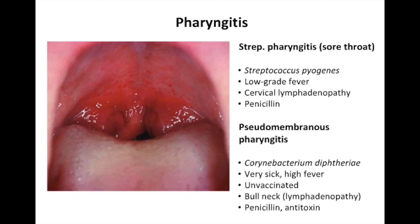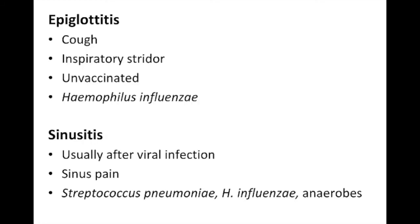Moving on, let's talk about epiglottitis — an infection of the epiglottis. Buzzwords include a barky cough or a baby that sounds like a seal, and inspiratory stridor. The bugs to think about are Haemophilus influenzae and Moraxella catarrhalis. These are important because in kids you have to worry about immunization status, since we now immunize against Haemophilus influenzae. Epiglottitis can also be caused by viruses — you would not give antibiotics for a viral infection, so it's important to identify what kind of bug you're dealing with.